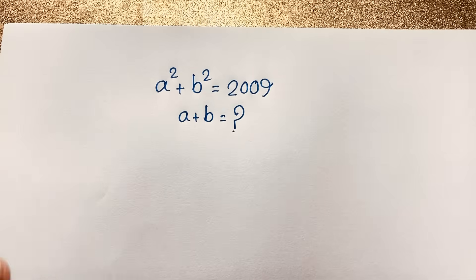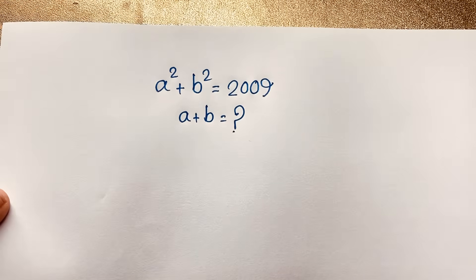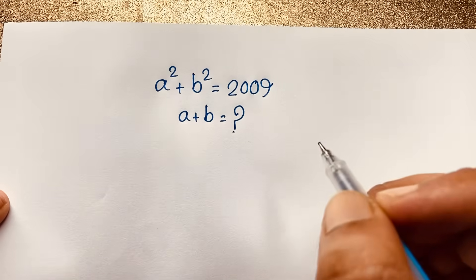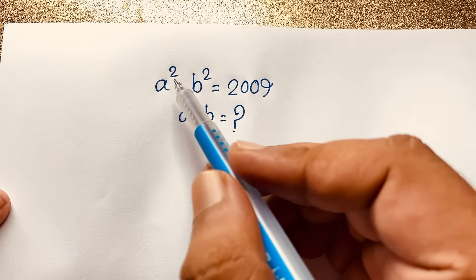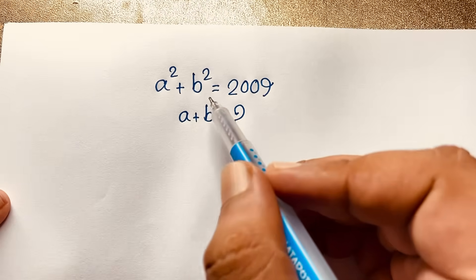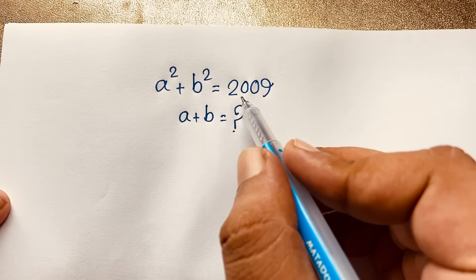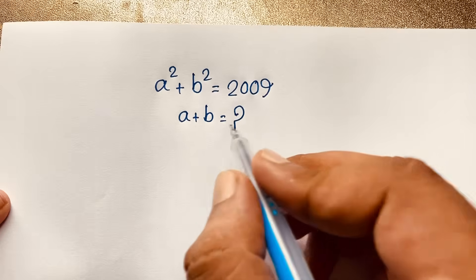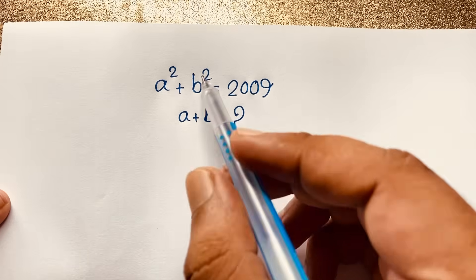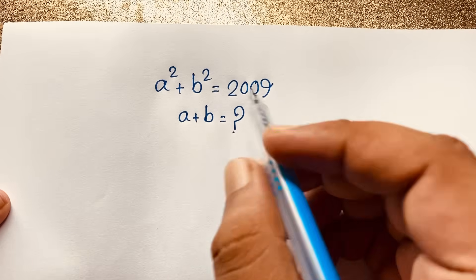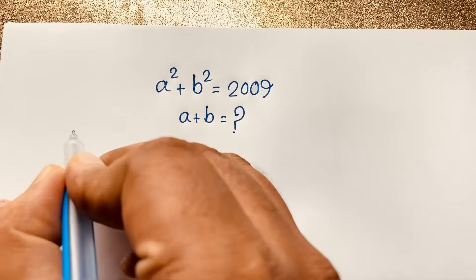Hello everyone, welcome to Russia's classroom. Today we have solved an interesting Math Olympiad question: a squared plus b squared is equal to 2009, and a plus b is equal to what? How to solve this interesting math question?